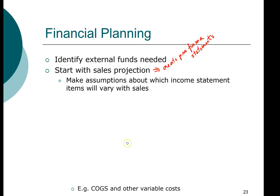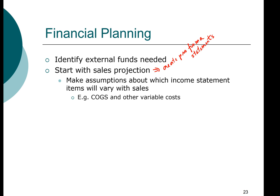When we computed the common size statements, we can use that information here as well. For example, cost of goods sold is a very common cost item that we assume will change with sales. So what we need for projections is to compute cost of goods sold as a percentage of sales — and we already have that information from our common size statement.